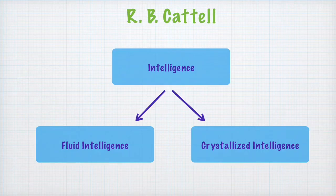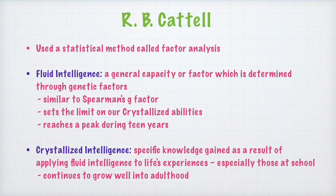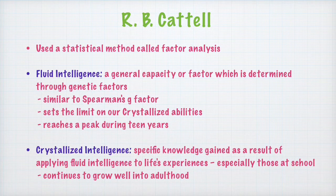Raymond B. Cattell used the statistical method of factor analysis to come up with his theory of intelligence, which looks at intelligence in terms of two abilities: fluid intelligence and crystallized intelligence. Fluid intelligence is a general capacity or factor which is determined through genetic factors, and is very close to Spearman's general factor. Crystallized intelligence refers to specific knowledge gained as a result of applying fluid intelligence to life's experiences.